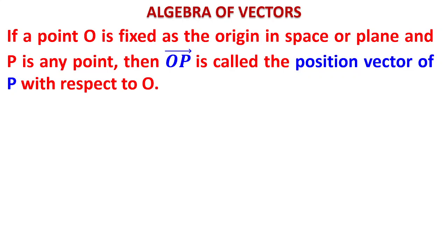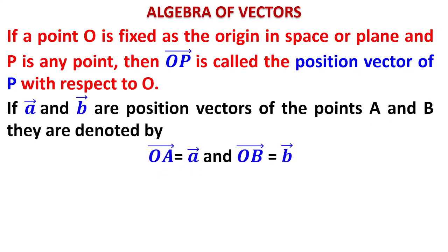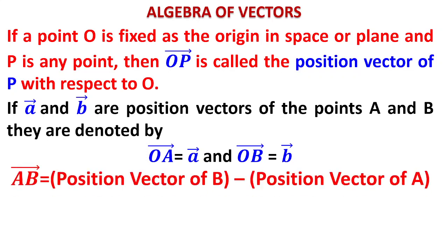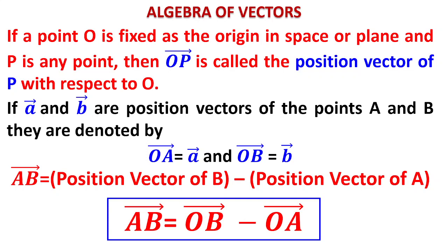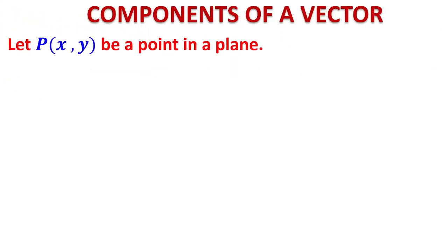If vector a and vector b are position vectors of points A and B, they are denoted as vector OA = small a and vector OB = small b. If you want to write vector AB in terms of position vectors, it will be the position vector of the end point minus position vector of the initial point — that is, OB minus OA, or vector b minus vector a. Any vector equals position vector of the terminal point minus position vector of the initial point.